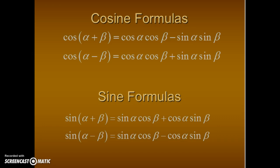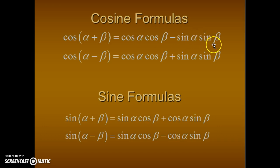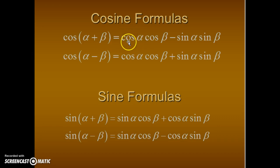You can pause the video and write these down in your notes. The cosine sum formula: the cosine of angle alpha plus angle beta is equivalent to the cosine of alpha times the cosine of beta minus the sine of alpha times the sine of beta. If we know the angle measures alpha and beta, and if they are exact value angle measures, then we can use this formula to find a real number value for the cosine of alpha plus beta.